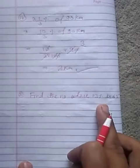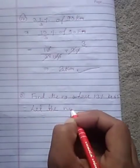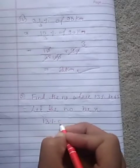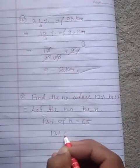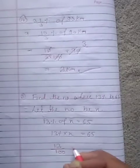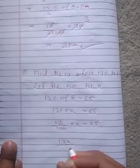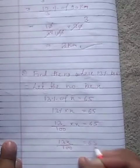Students, here find the number whose 13 percent is 65. Clear? Let the number be X. Clear? 13 percent of X, 13 percent of X is equal to 65. 13 percent into X is equal to 65. Remove this symbol. 13 upon 100 into X is equal to 65.